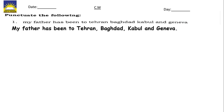Let's write the answer together. M capital — 'My father has been to Tehran,' T capital, then comma. 'Baghdad,' B capital, then comma. 'Kabul,' K capital. 'And Geneva,' G capital. And then full stop. Hopefully you have done it with me — very good.